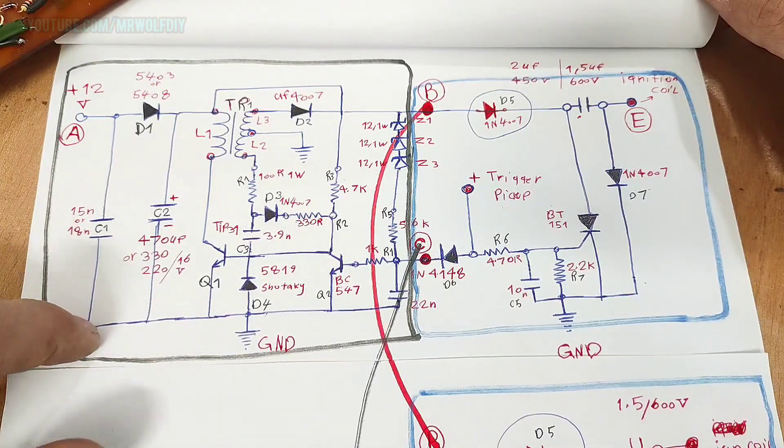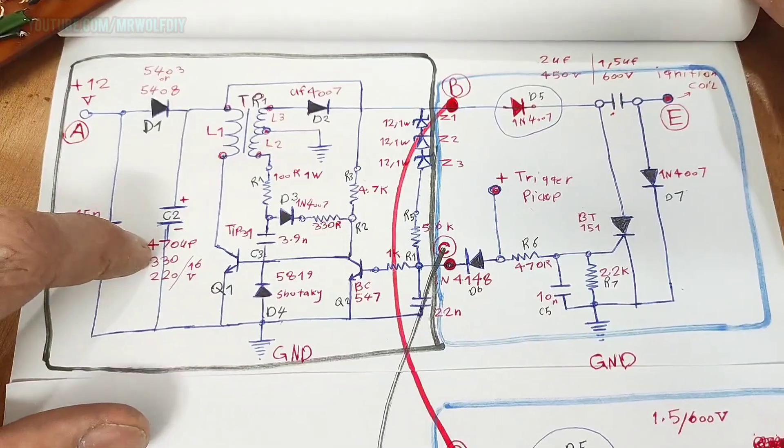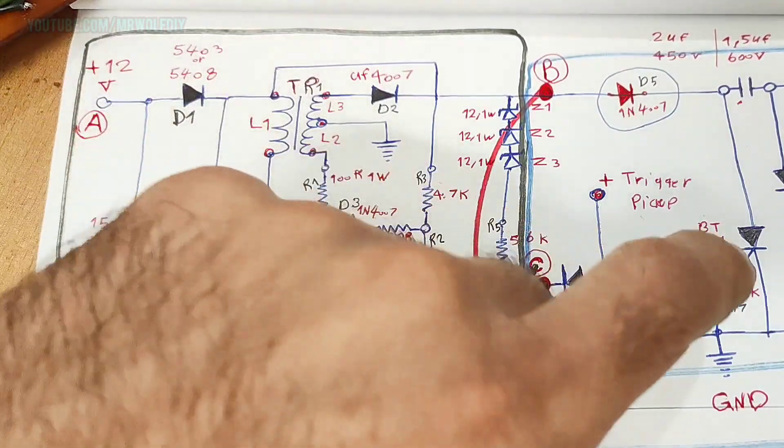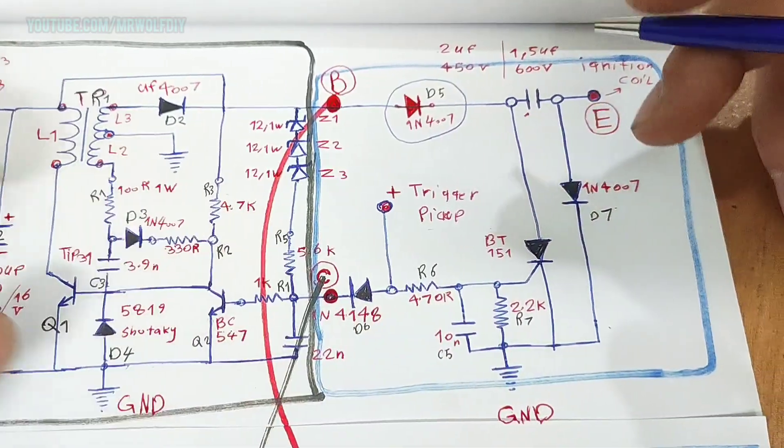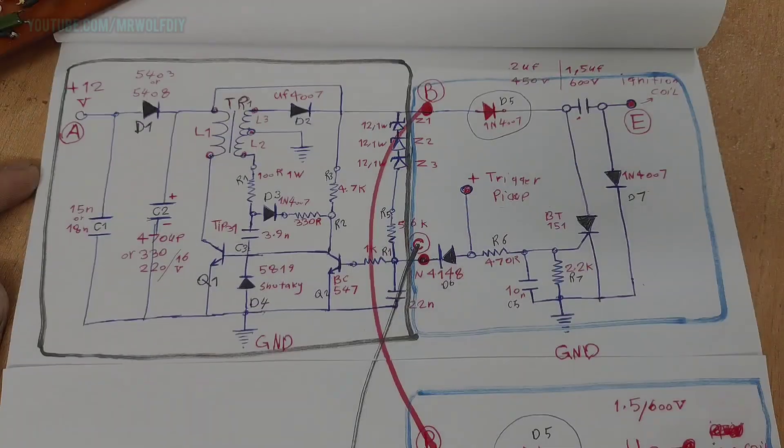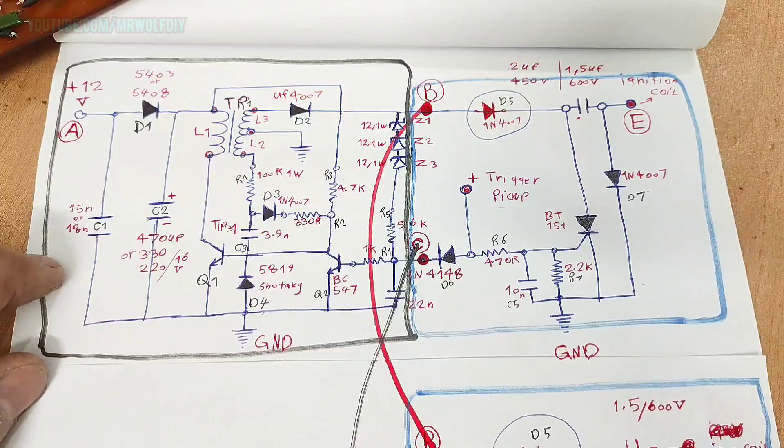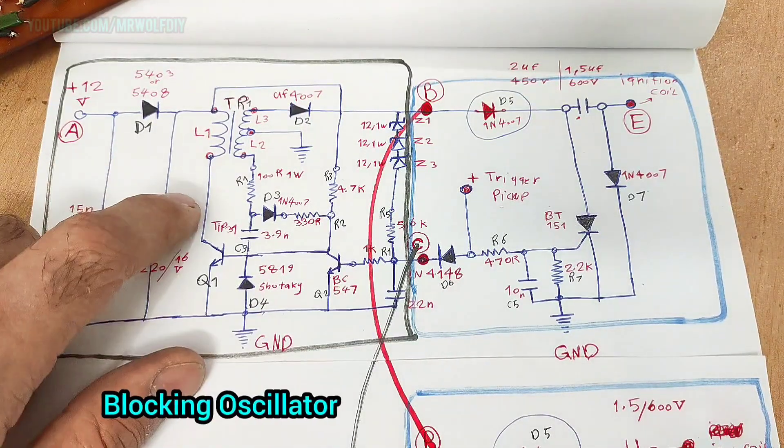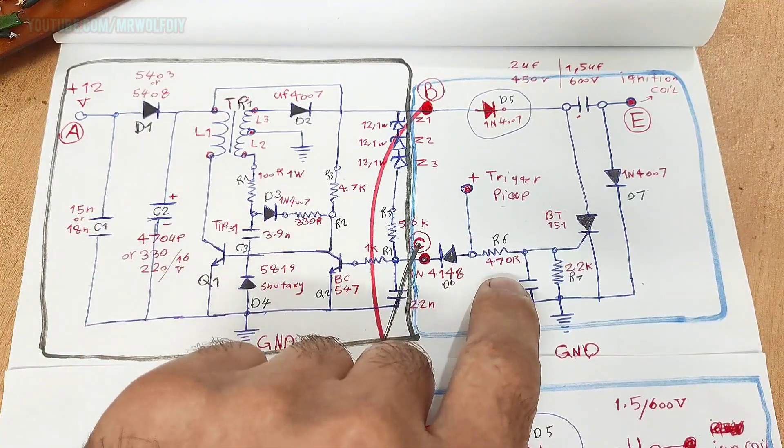This circuit actually splits into two parts: first, high voltage converter, and second part is CDI unit. The circuit in the black box is a high voltage converter based on blocking oscillator, and the blue box is a CDI unit.